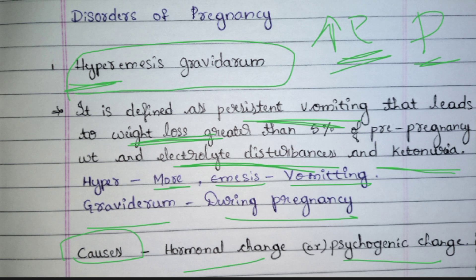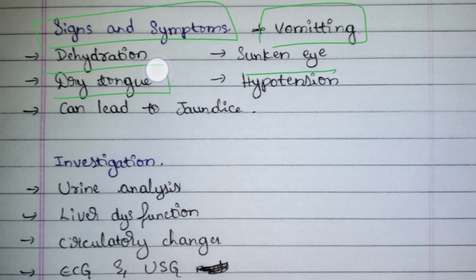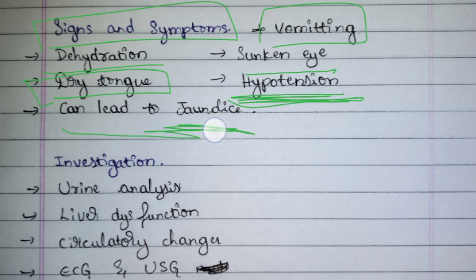Apart from hormonal and psychogenic causes, there are a few minor reasons — allergic reactions and certain food items can cause vomiting. Signs and symptoms of Hyperemesis Gravidarum include vomiting, dehydration, sunken eyes, dry tongue, and hypotension. Because of excessive loss of electrolytes the BP gets low, and if this condition lasts it may even lead to jaundice.